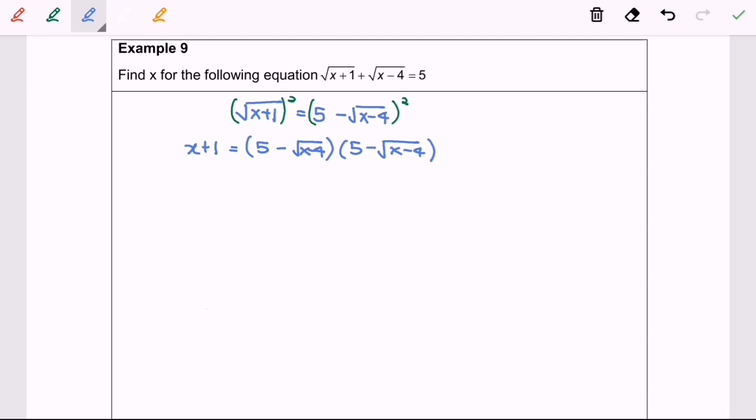Next, I'm going to expand the right-hand side. So x plus 1 equals 5 multiply with 5, we have 25, minus 5 square root of x minus 4. Again, minus 5 square root of x minus 4.